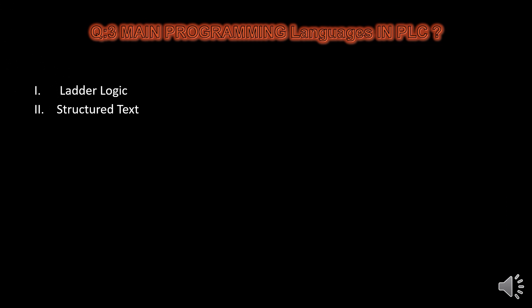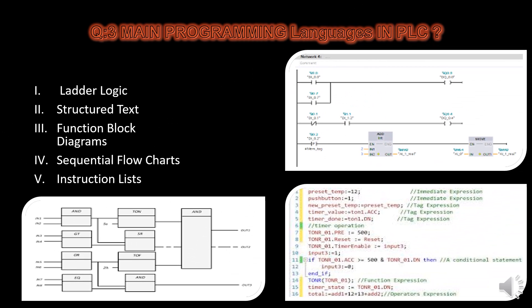The main programming languages used in PLC are: ladder logic, structured text, function block diagram, sequential function charts, and instruction list. Ladder logic is the most common language for programming of PLCs.